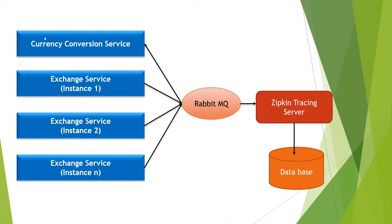Suppose a request comes and hits the Currency Conversion Service. If you write logger dot info, the Currency Conversion Service should write that logger information to RabbitMQ. Since we've already implemented Spring Cloud Sleuth, the trace ID and span ID all go with the log to RabbitMQ. So all requests generating a log with Spring Cloud Sleuth implementation will write their logs to RabbitMQ. RabbitMQ is the producer, and the Zipkin tracing server is the consumer.